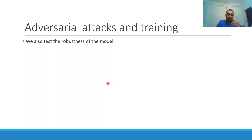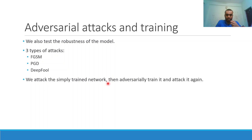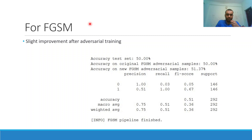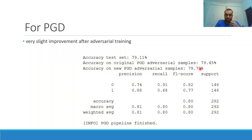We will employ three types of adversarial attacks: FGSM, PGD, and DeepFool. We attack the simply trained network, then adversarially retrain and attack again to compare results. For the Fast Gradient Sign Method (FGSM), the simply trained model achieves only 50% accuracy under attack. After adversarial training and then testing with adversarial samples, accuracy is 51.37% — only a slight improvement. This model is not very robust to the FGSM attack technique.